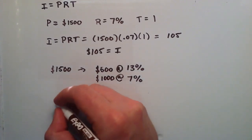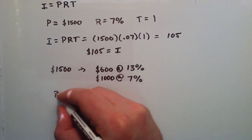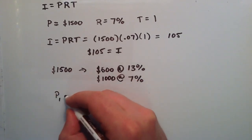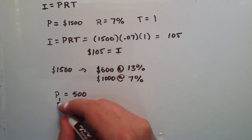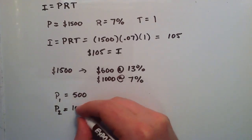So basically, the principal, we're going to have P1, the first principal is going to be $500. And the second principal, we'll call it P2, is going to be $1,000.